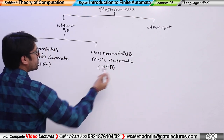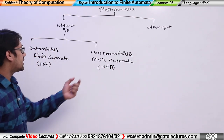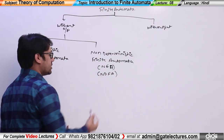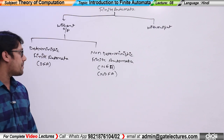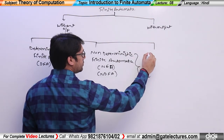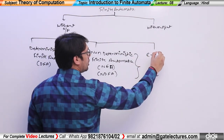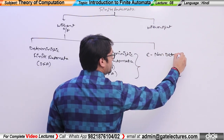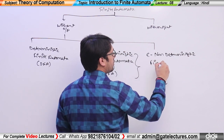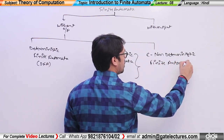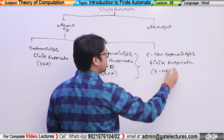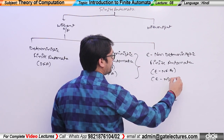For NFA, different books may have different notations — some write just Non-Deterministic Finite Automata, others write NDFA. It can be written in any way. And there is one more type, which is a variant of NFA where we can also give epsilon moves, called Epsilon Non-Deterministic Finite Automata, also written as epsilon-NFA or epsilon-NDFA.